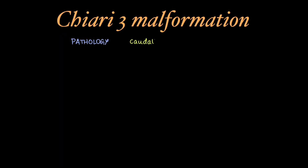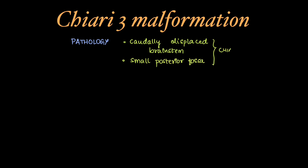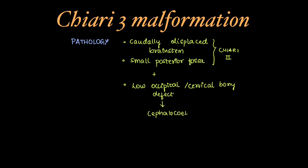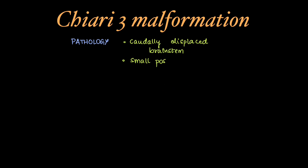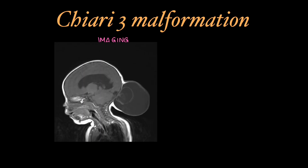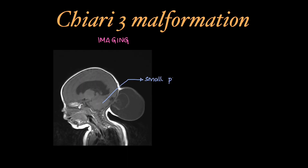In Chiari 3 malformation, there will be a caudally displaced brainstem with a small posterior fossa, just like Chiari 2 malformation. But instead of myelomeningocele, there is a low occipital or cervical bony defect leading to a cephalocele. MRI is the modality of choice, and on T1 sagittal images we can see a small posterior fossa and a cephalocele with herniated meninges.